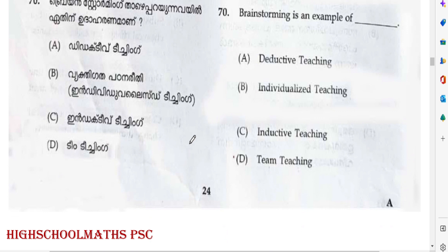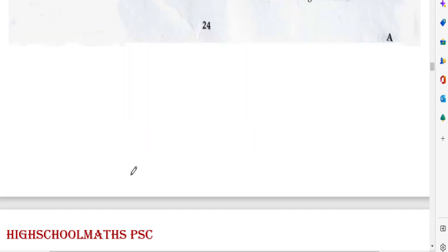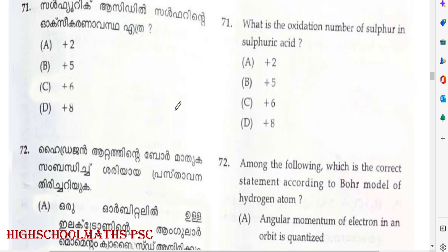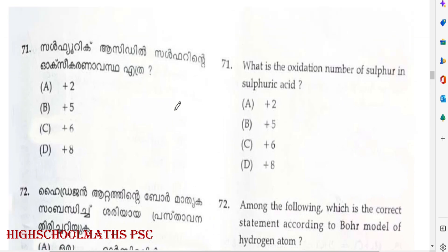Brainstorming is an example of inductive teaching. Question: What is the oxidation number of sulfur in sulfuric acid? Answer: Option C — Plus 6.